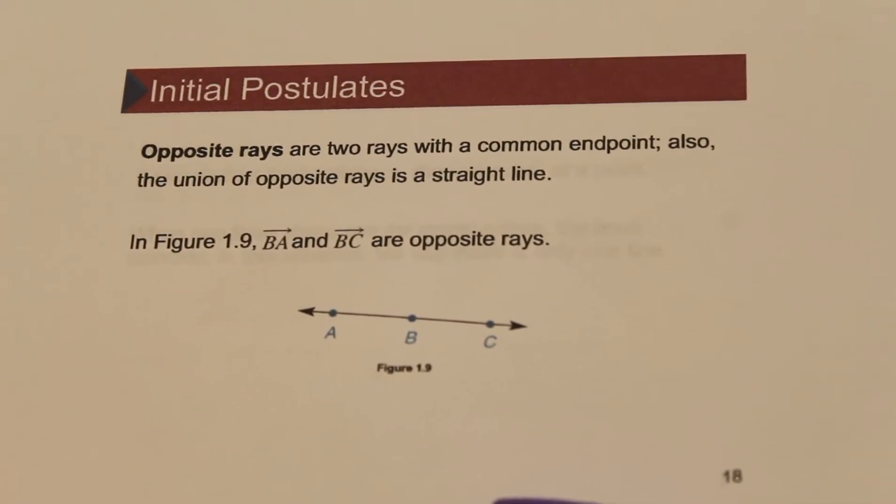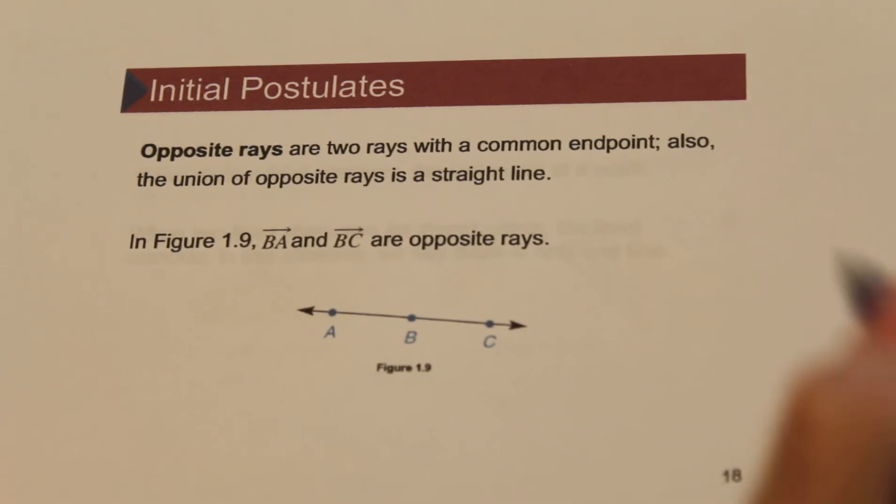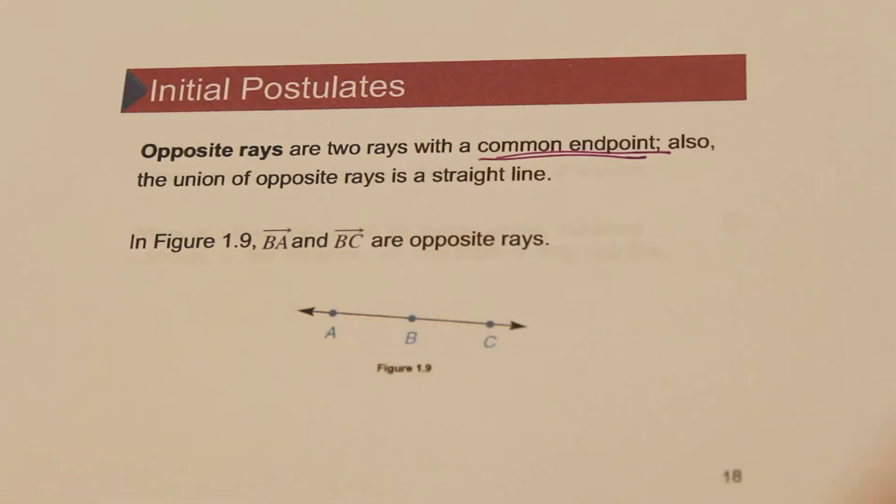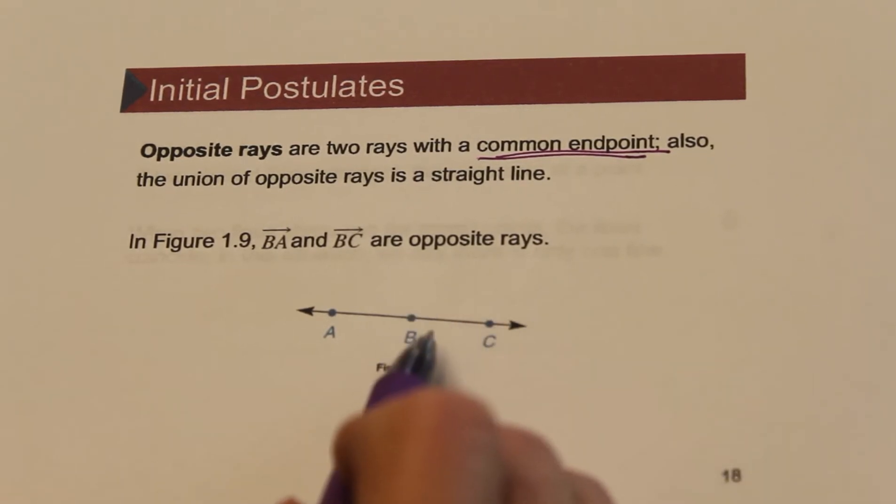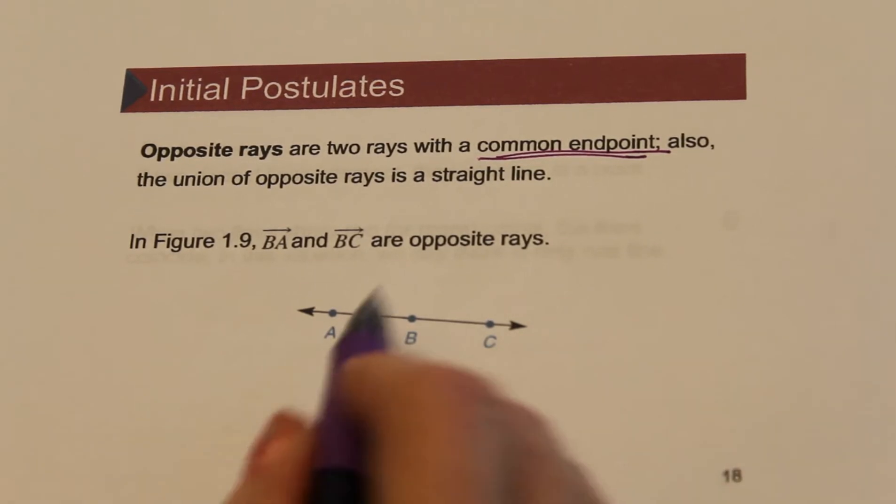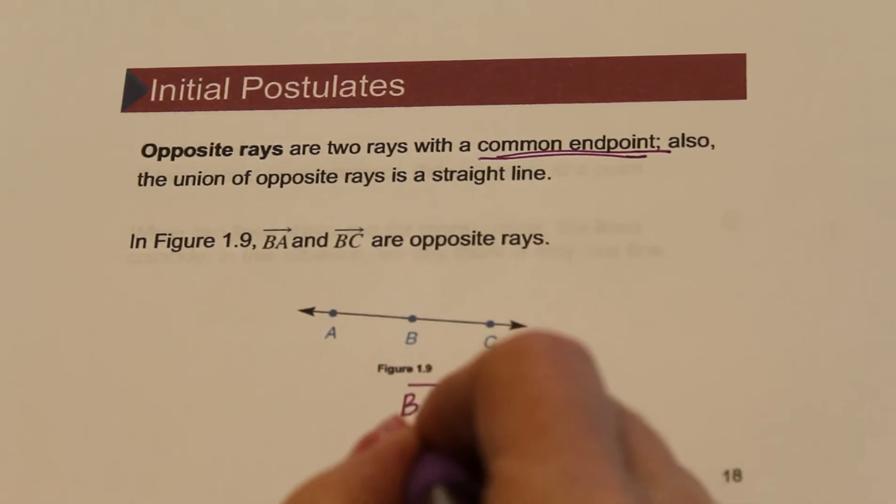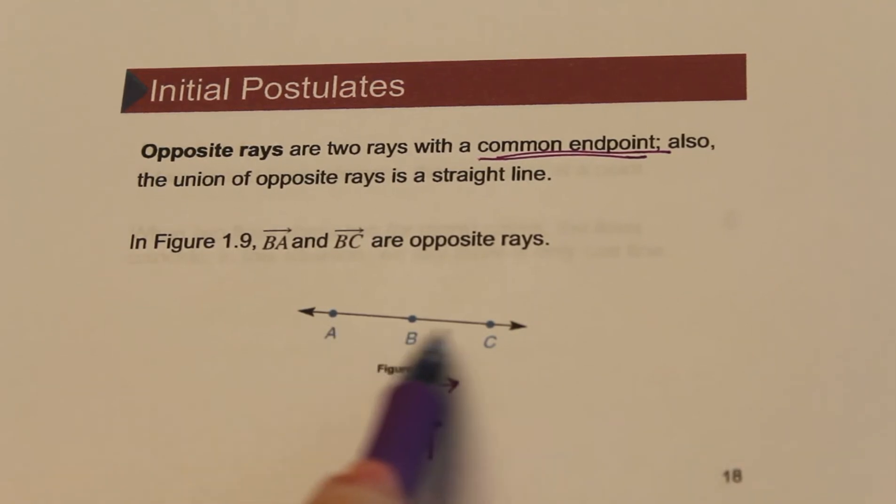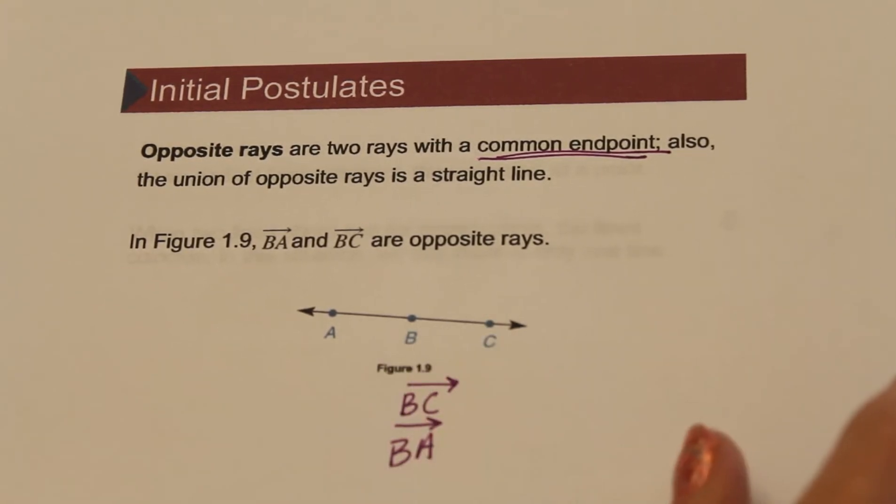Now what are opposite rays? Opposite rays are two rays that have a common endpoint, but their union is a straight line. In other words, they go in exact opposite directions. Here's the ray BC and here's the ray BA, and so BC and BA would be considered opposite rays because they create a straight line or straight angle, which is 180 degrees. We learned that in a previous section.